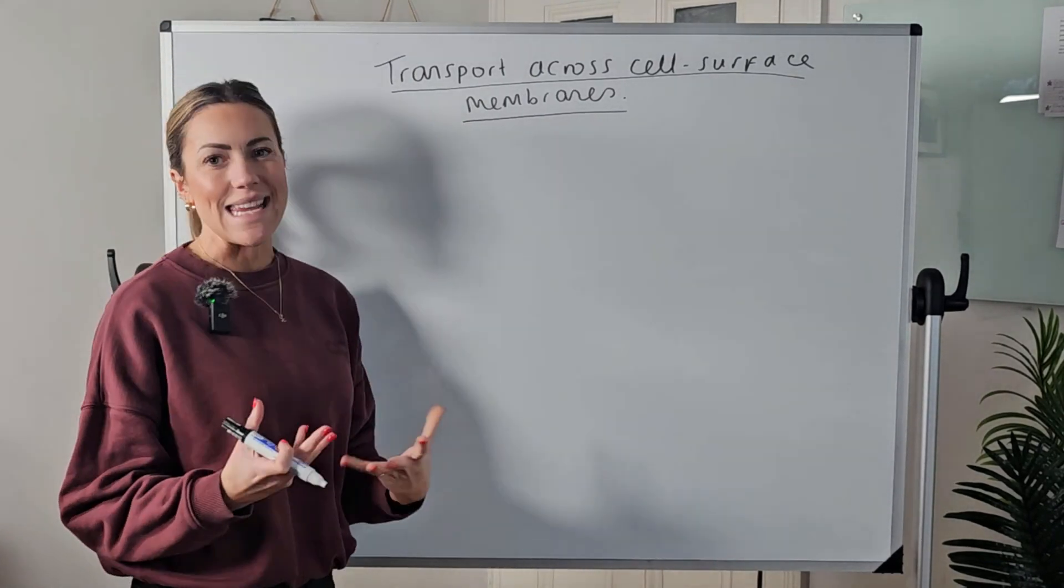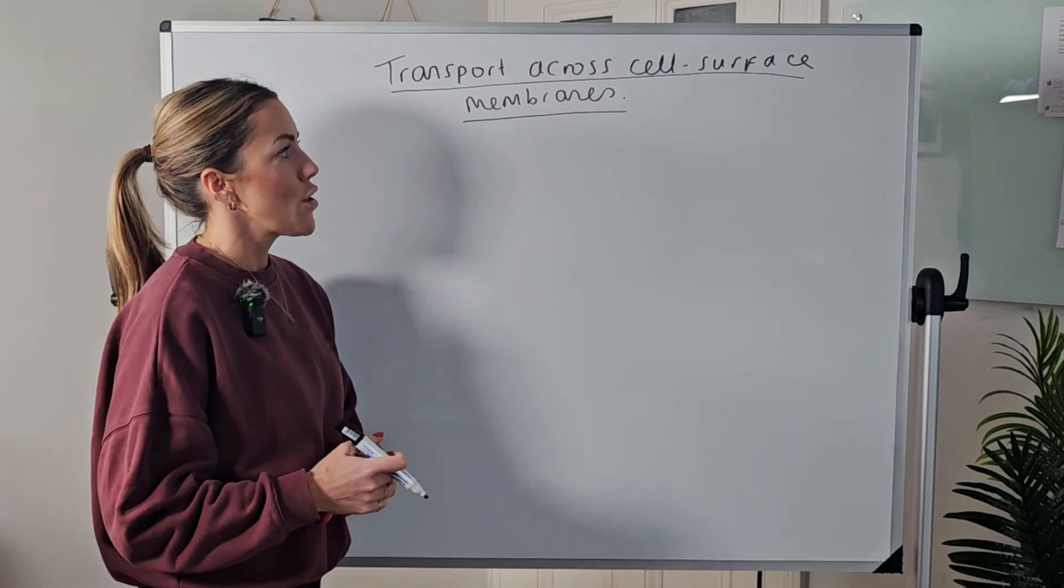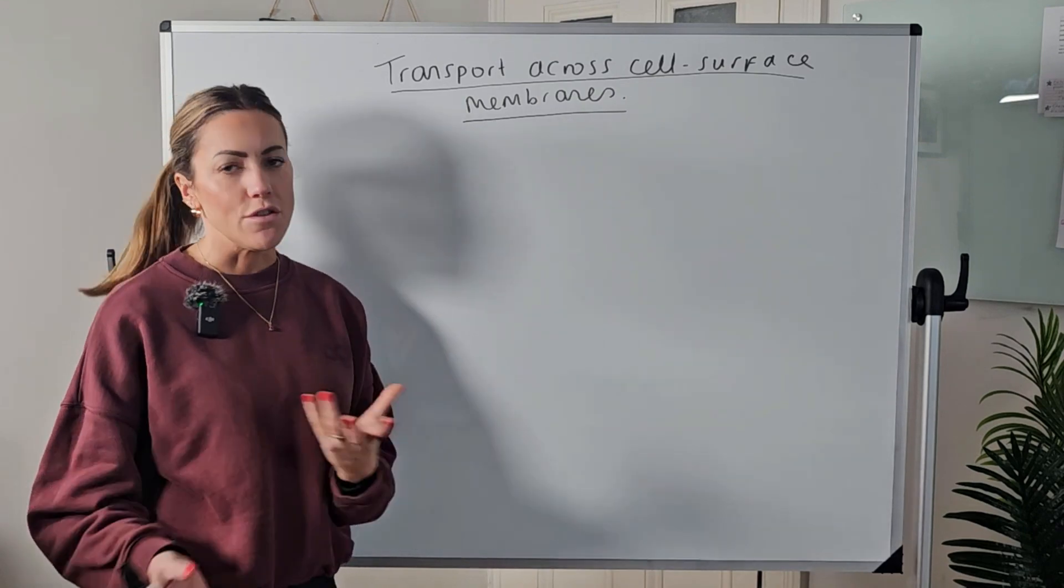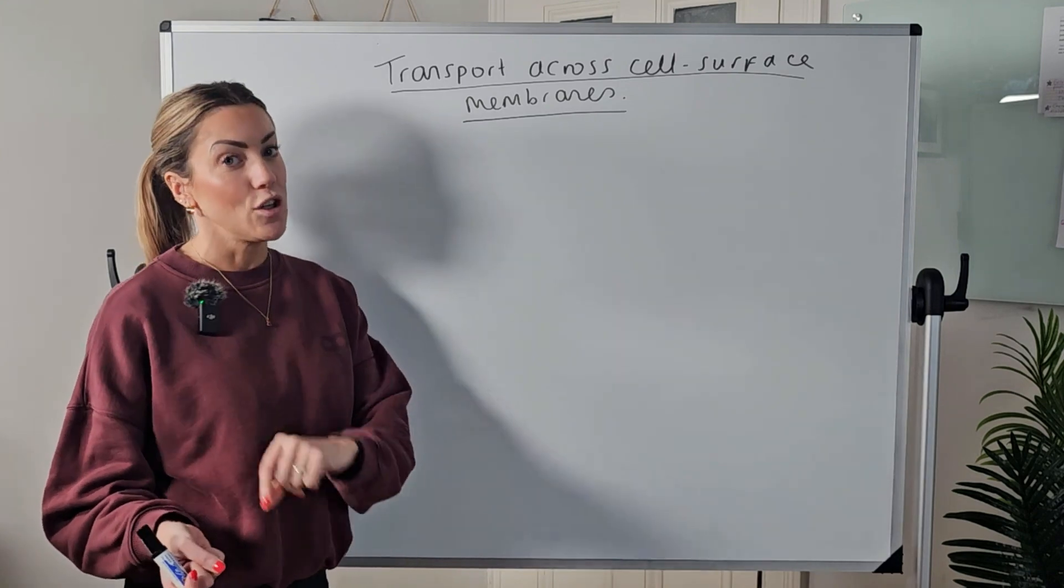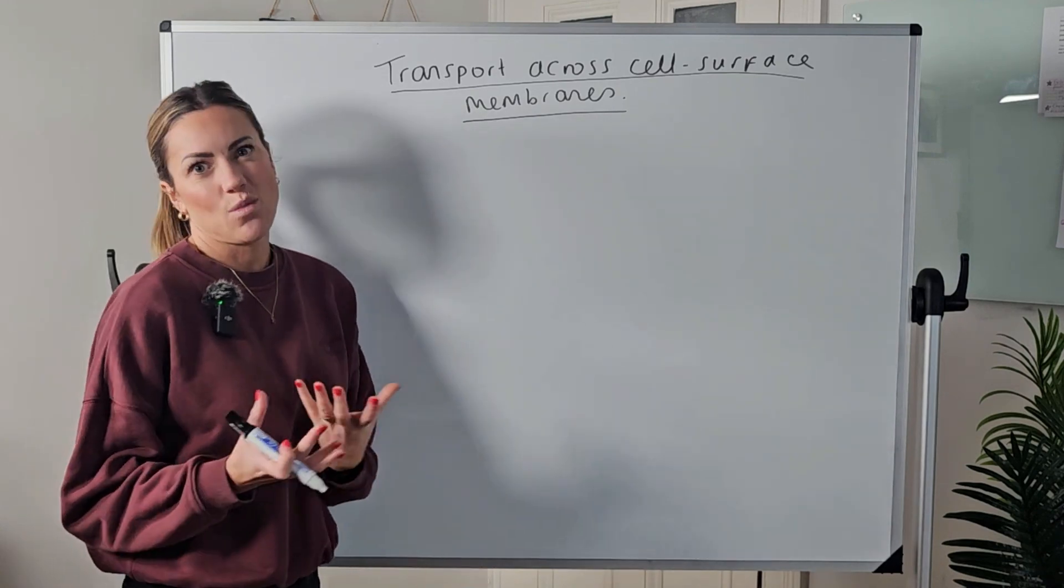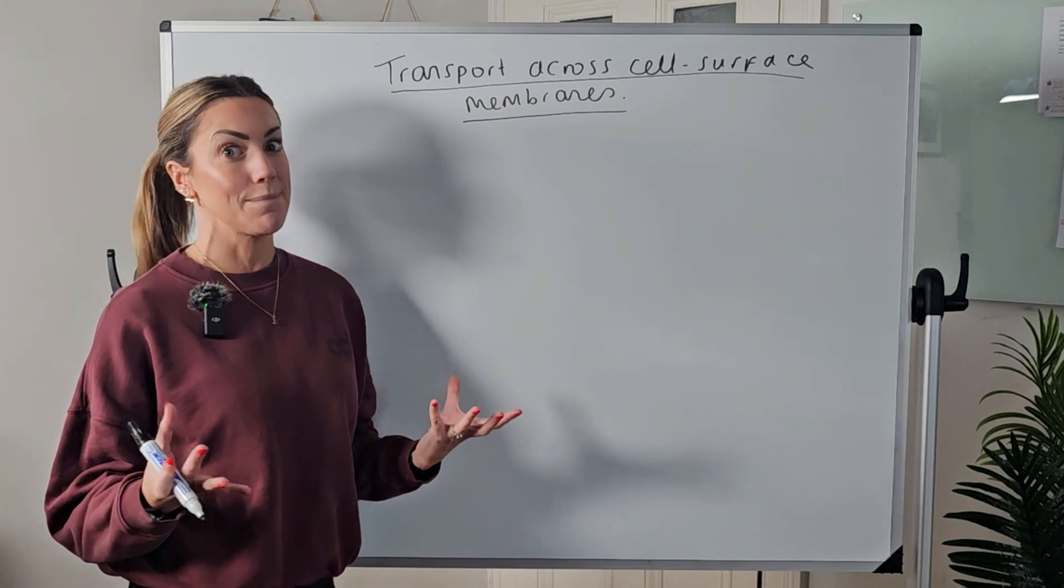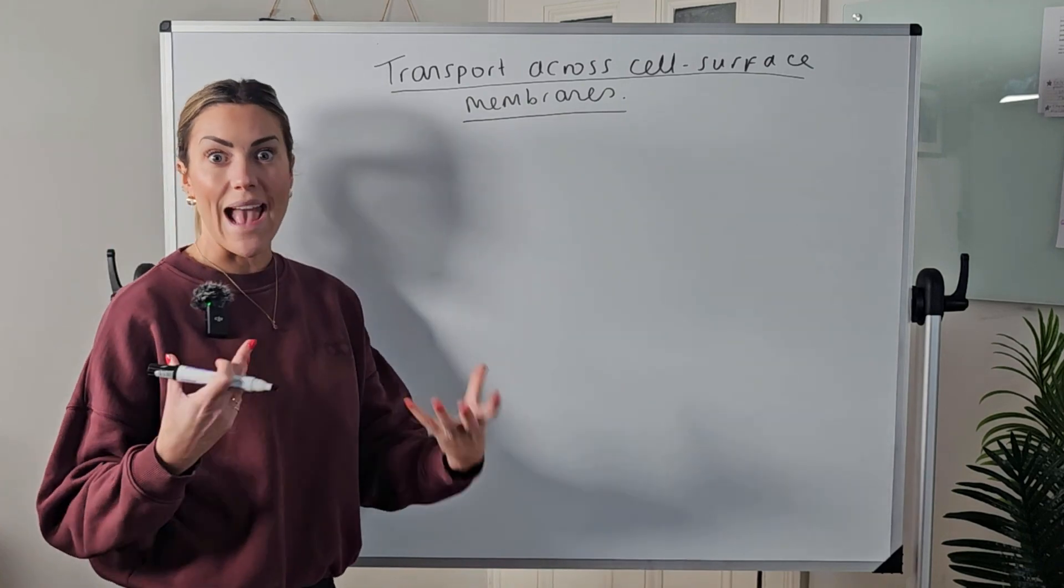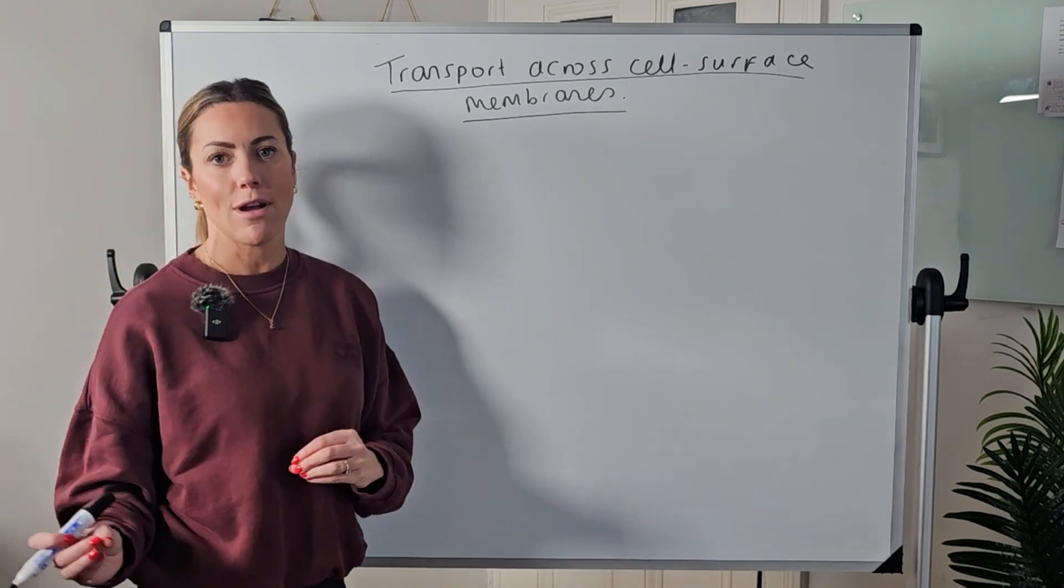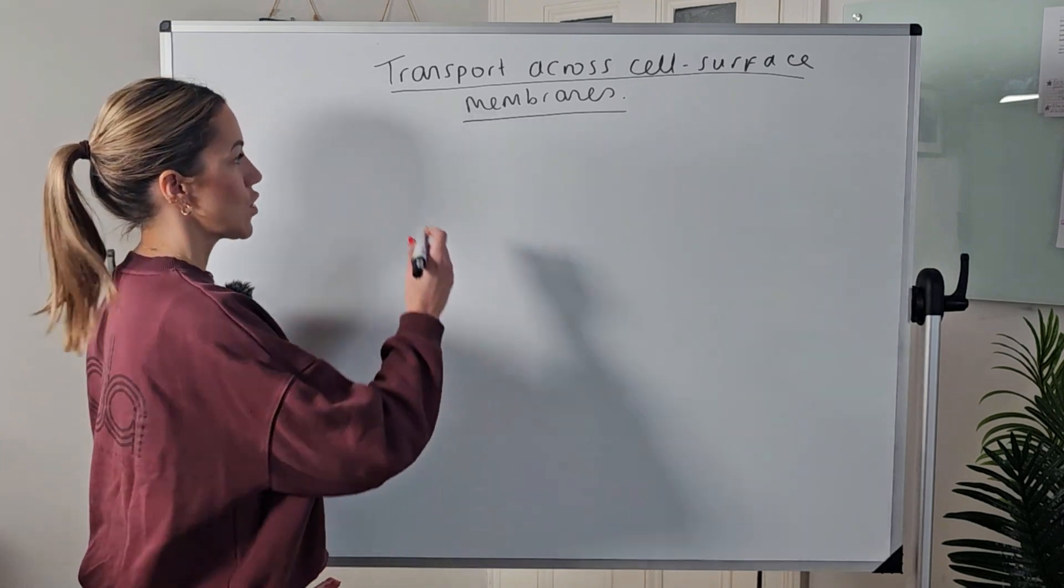In this video we're going to explain different methods of transport across the cell surface membrane. This links to cell membrane structure and back to GCSE where you do diffusion, osmosis, and active transport. But for A-level there are a couple of extra methods that we need to know and a little bit more detail about each individual method. This could potentially be like a five or six mark question on an exam paper where they ask you to name and describe or explain different transport methods across the cell membrane. So let's go through and imagine it's an extended response question.